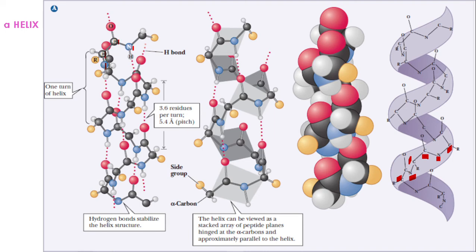This nitrogen, this carbon, and the next carbon form another amino acid. The bond between carbonyl carbon and amino nitrogen is called the peptide bond — here is the peptide bond in this diagram. Can you see that the molecule is just bending like this? Carbon, carbon, nitrogen, carbon, carbon, nitrogen, carbon — the molecule is bending here.